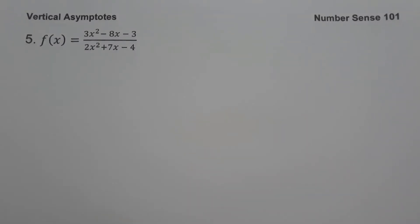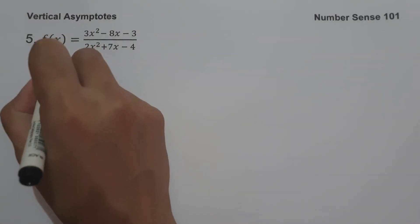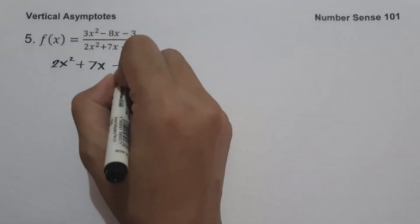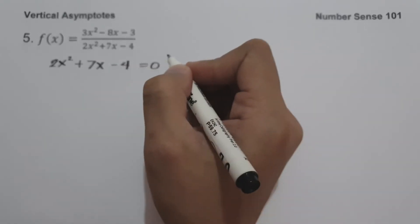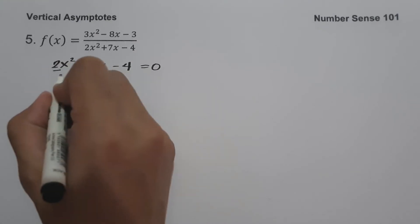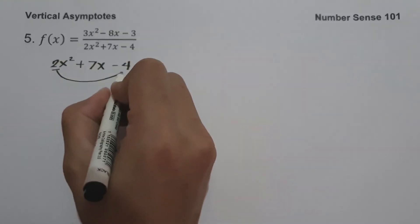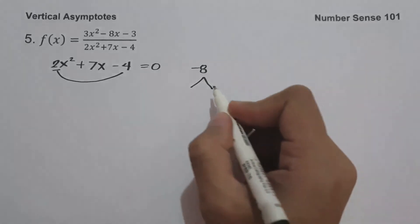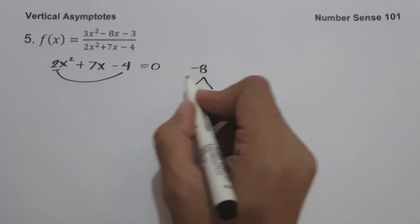On our last example, we have f of x equals 3x squared minus 8x minus 3 all over 2x squared plus 7x minus 4. To find the vertical asymptote, let us simply equate the denominator equal to 0. So let us have 2x squared plus 7x minus 4 equal to 0. Since the value of a is not equal to 1, let us multiply 2 and negative 4, and that is negative 8. What are the two numbers? If we multiply we can get negative 8, and if we add we can get 7.